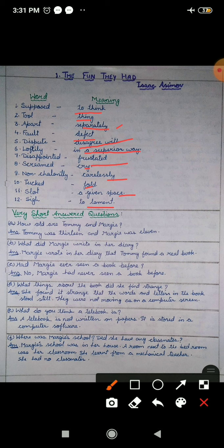Now, very short answered questions. First is, how old are Tommy and Margie? Tommy aur Margie ki kya age thi? Tommy was 13 years and Margie was 11. What did Margie write in her diary? Margie ne aapne diary mein kya likha? Margie wrote in her diary that Tommy found a real book. Ki Tommy ko aaj ek real book mili, asli book.